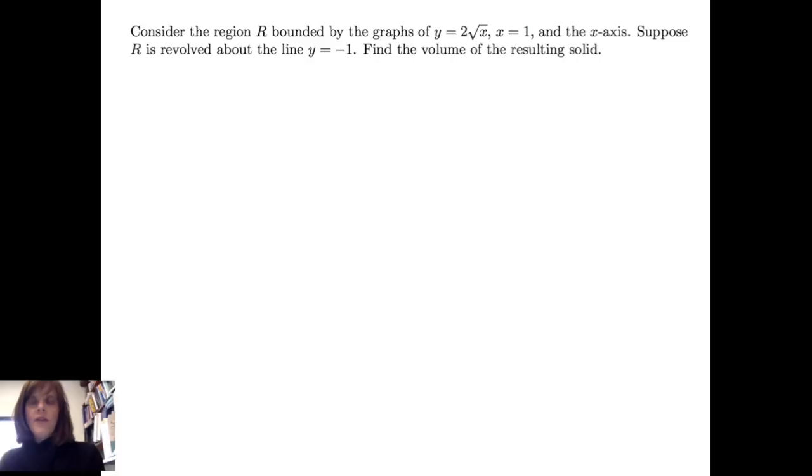Consider the region R bounded by the graphs of y equals 2 times the square root of x, x equals 1, and the x-axis. Suppose this region R is revolved around the line y equals negative 1. We want to find the volume of the resulting solid.